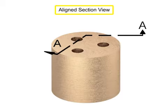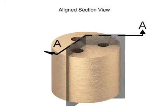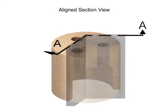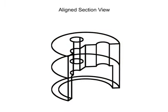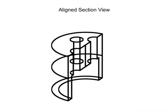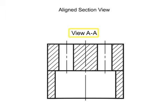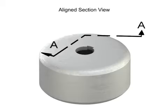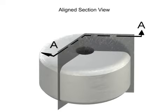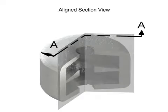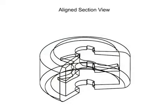Aligned section views occur where the cutting plane bends to pass through specific features of an object, then rotates to a normal vertical or horizontal plane, and is projected to the section view. For circular parts, the cutting plane will almost always pass through the center of the part, and then angle to another feature. Aligned views are typically used with complex or circular parts with interior features that do not appear in a straight line.